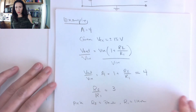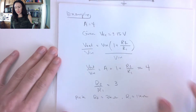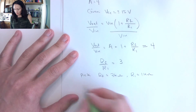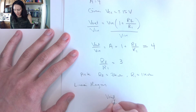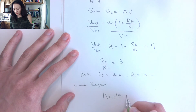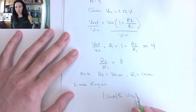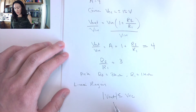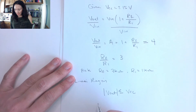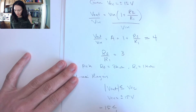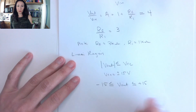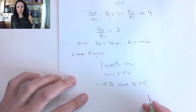To stay in the linear region, we need the absolute value of V out to be less than or equal to VCC. Since VCC is plus or minus 15 volts, we need negative 15 less than or equal to V out less than or equal to positive 15. This is the requirement to stay in the linear region; otherwise our output is saturated and capped.